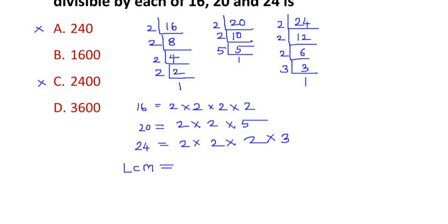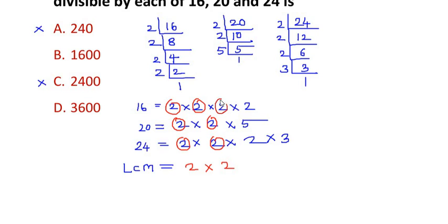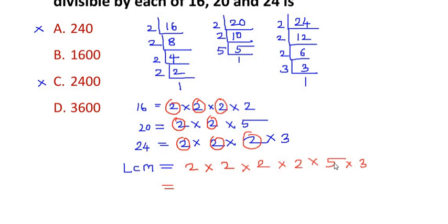For the LCM, we circle out the common numbers. 2 is common in all three, so we write 2. There is one more 2 common in all, so we write it once more. Then we have a 2 common from two of the terms. Finally we write the remaining terms: 2 × 5 × 3. So the LCM is 2 × 2 × 2 × 5 × 3, which gives 8 × 10 = 80, and 80 × 3 = 240.